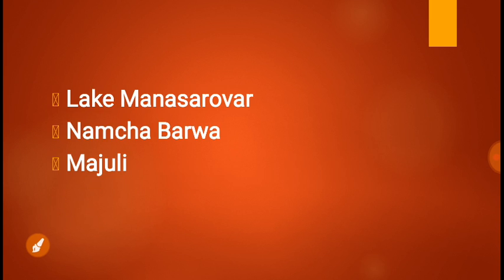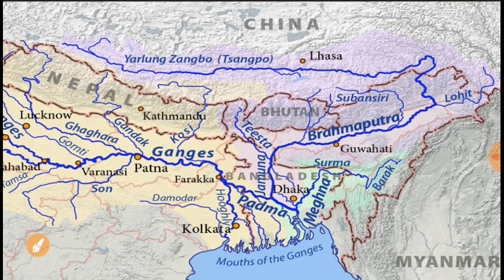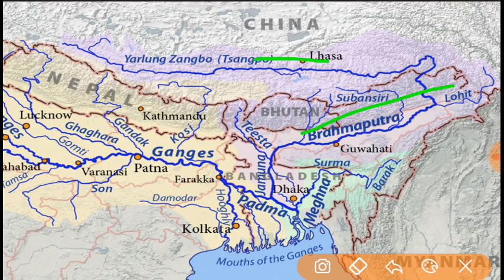If you look at the Brahmaputra, it originates near Lake Manasarovar, and it originates in China. If you look at the countries it passes through — it's China, India, Bangladesh — and these are 3 countries.